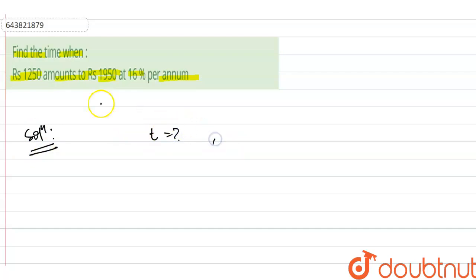So we will write here time, and rupees 1250 amounts to rupees 1950 means rupees 1250 is principal. So principal P is equal to 1250 rupees, and amount is 1950 rupees.